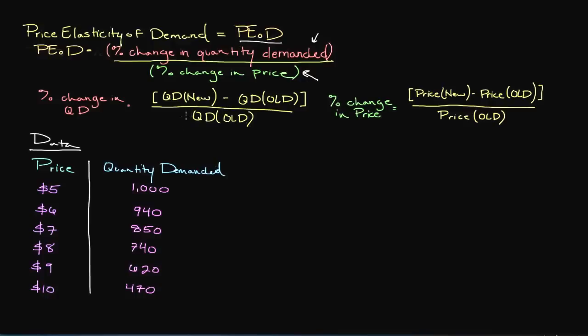And I have these notated here and written below. So we have QD, which stands for quantity demanded, of the new price, so the price that we are going to, minus quantity demanded of the old price divided by quantity demanded of the old price. And then to gauge the percentage change in price, we have the new price less the old price divided by the old price.